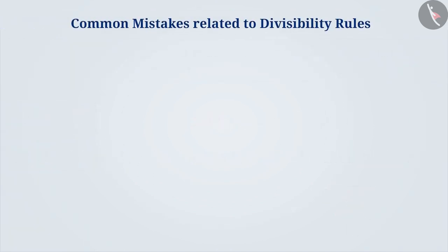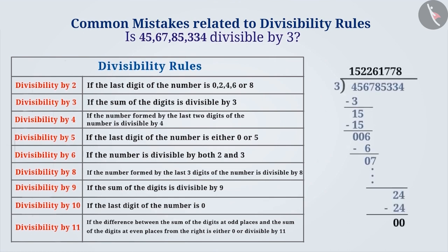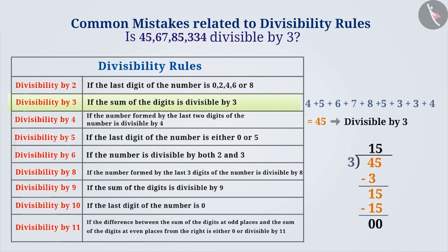Let us now understand some common mistakes related to divisibility rules. Many times, the divisibility rules are known, but if asked to check for divisibility of a larger number, then it is checked by normal division rather than using the rules. Sometimes, there is difficulty in applying the rules correctly. Divisibility rules help check for divisibility. For example, the rule of divisibility by 3 says: if the sum of all the digits is divisible by 3, then that number is also divisible by 3. Here, the sum of the digits of the given number is 45, which is divisible by 3. Therefore, this number is divisible by 3.